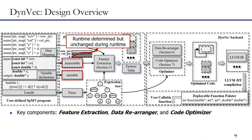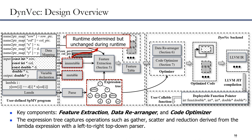DEMV first interprets the lambda expression and generates the expression tree, which describes the computation process without concerning specific optimizations. It captures operations such as gather, scatter, and reduction derived from the lambda expression with a left-to-right top-down parser. Then, DEMV represents the runtime memory access and computation patterns of SPMV with instruction features derived from the immutable data, passed into the expression tree through feature extraction. DEMV then uses a hashing function to merge loop iterations with the same instruction features and write locations to avoid memory bloat.